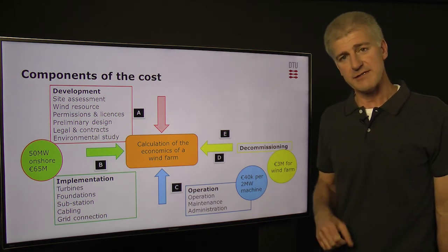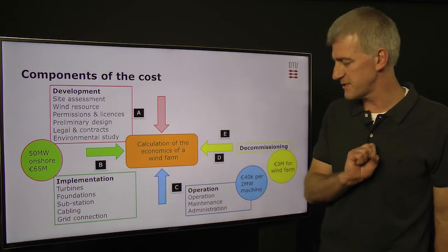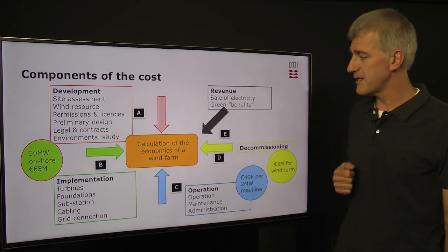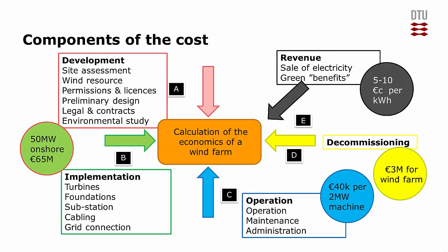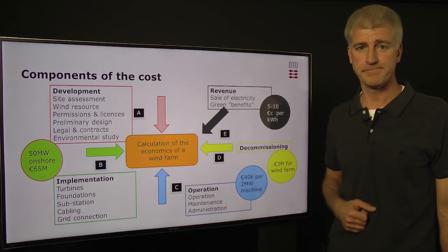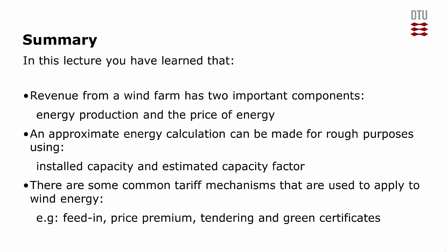Moving on to where revenue fits into the economic analysis of a wind farm — we have the different cost components: development cost, implementation cost, operation costs, and decommissioning costs. Revenue comes in with the sale of electricity and any green benefits we might receive. As a rule of thumb, 5 to 10 euro cents per kilowatt hour is quite common. In summary, the revenue from a wind farm has two very important components: the actual energy production and the price for that energy. We can make an approximate energy calculation using the installed capacity and the estimated capacity factor. And there are four common tariff mechanisms for wind energy support: the feed-in tariff, the price premium, the tendering scheme, and green certificates.